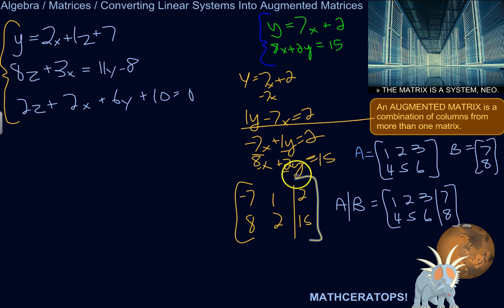This would be the augmented matrix which would represent this system of linear equations. Then you could go on from there and do the elementary row operations or what have you in order to solve that system.